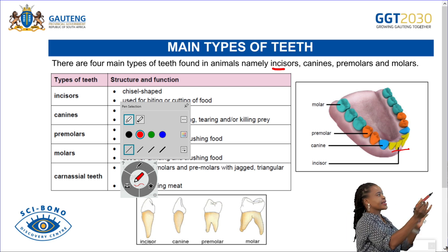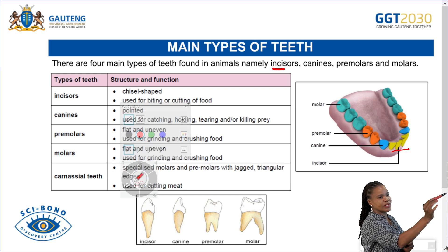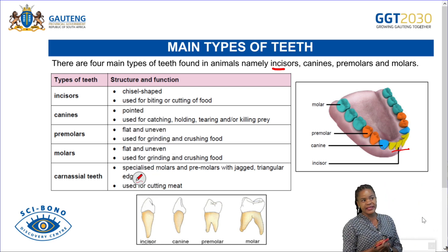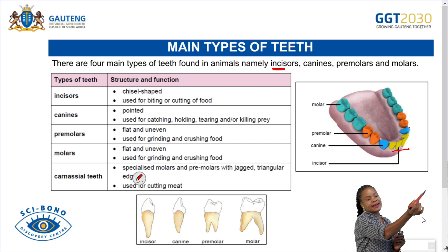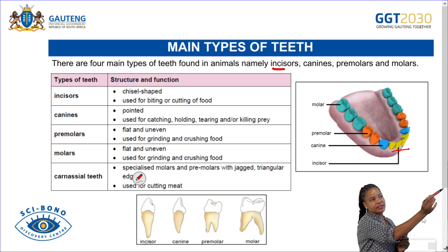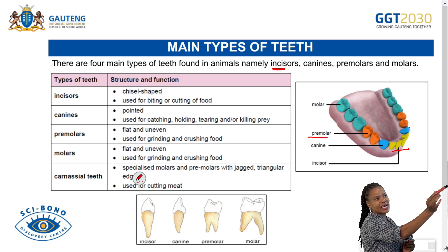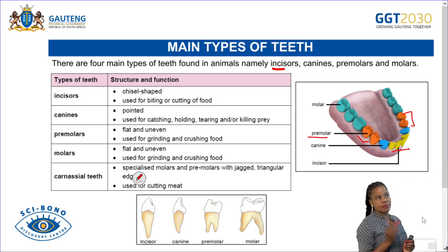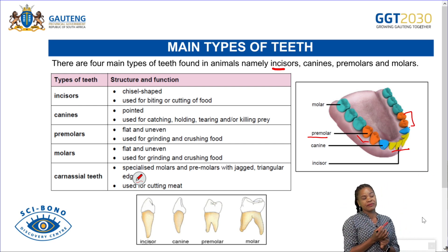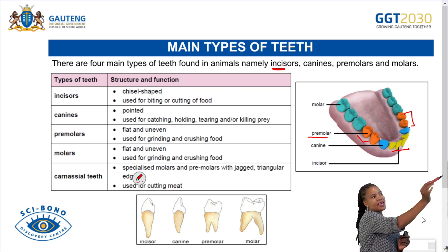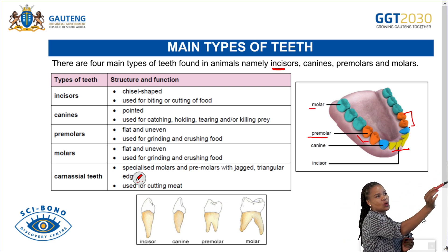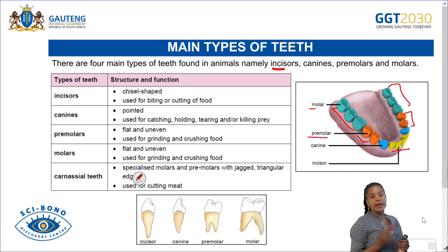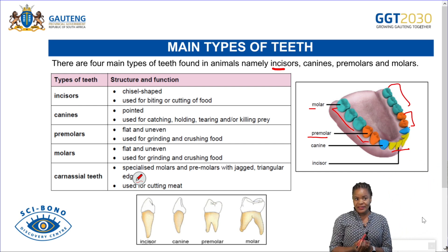The second type of teeth are the canines — the blue teeth in the diagram are the canines. Then we have the premolars, the orange ones. And the last type are the molars — all the green teeth are the molars.